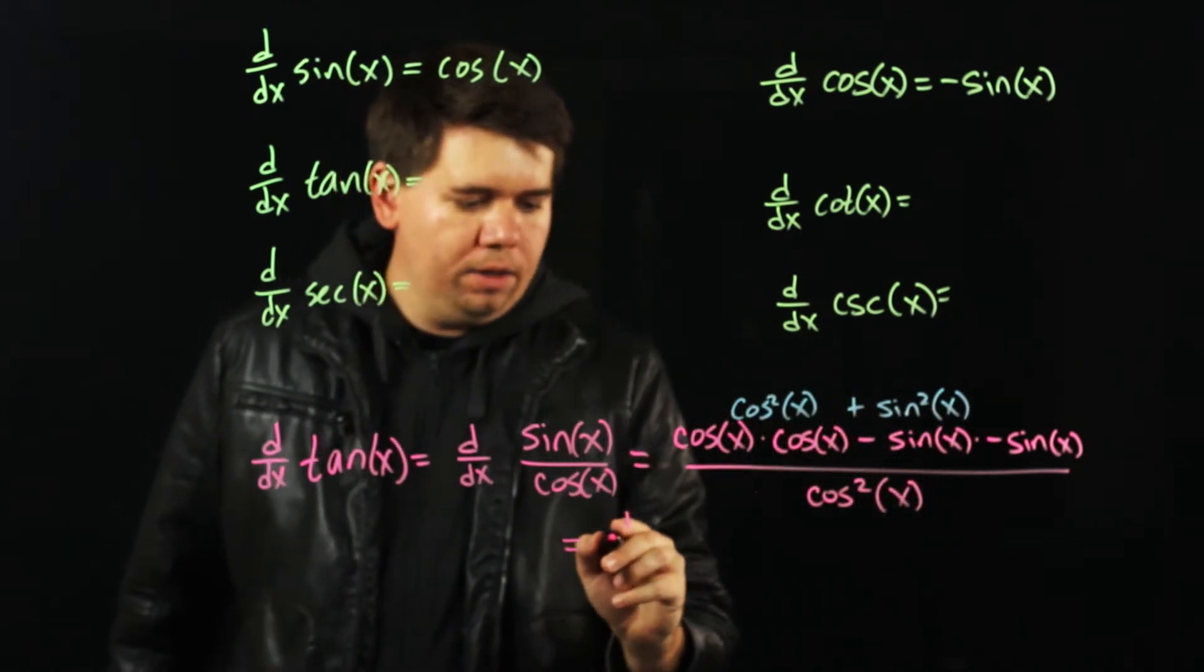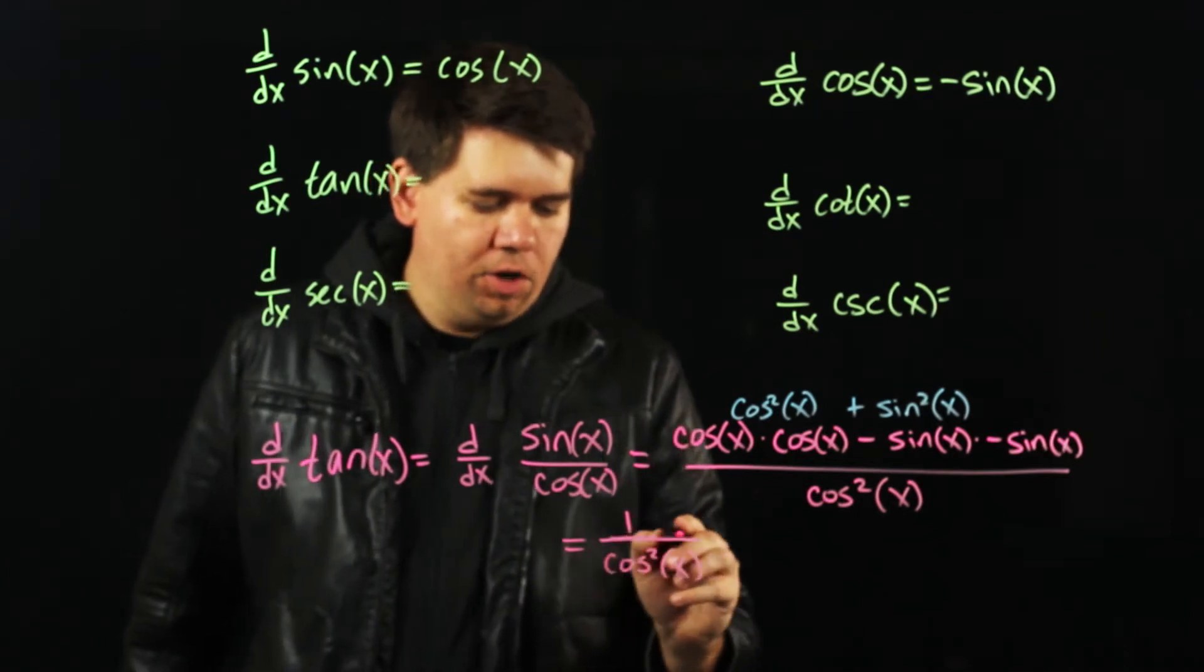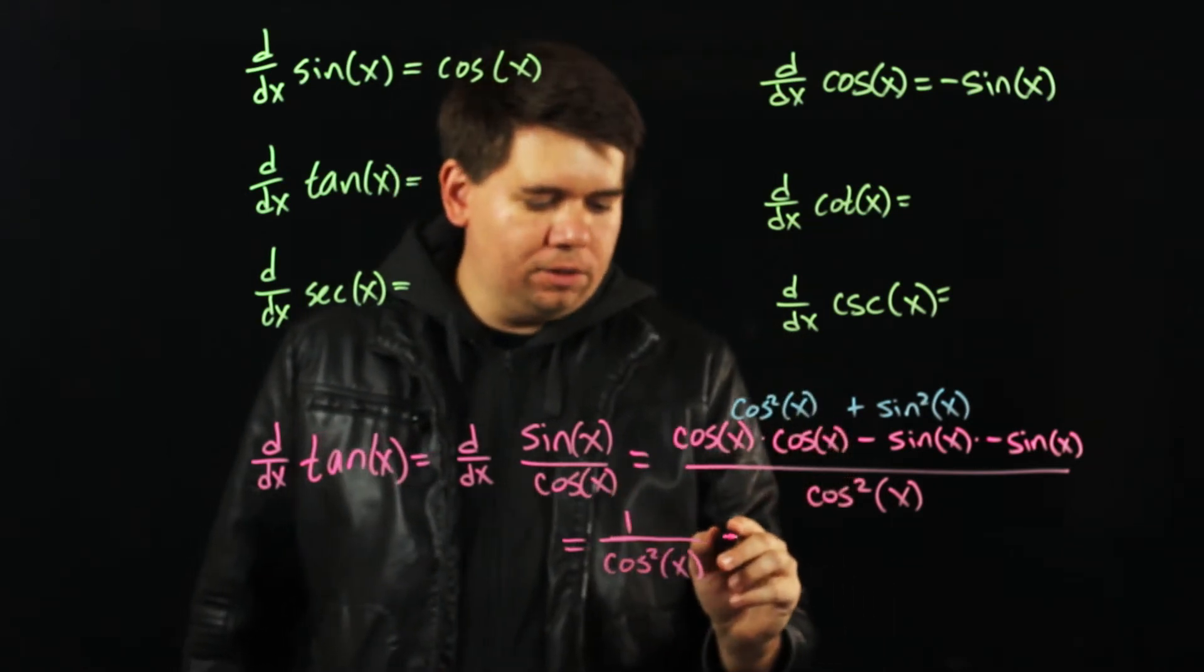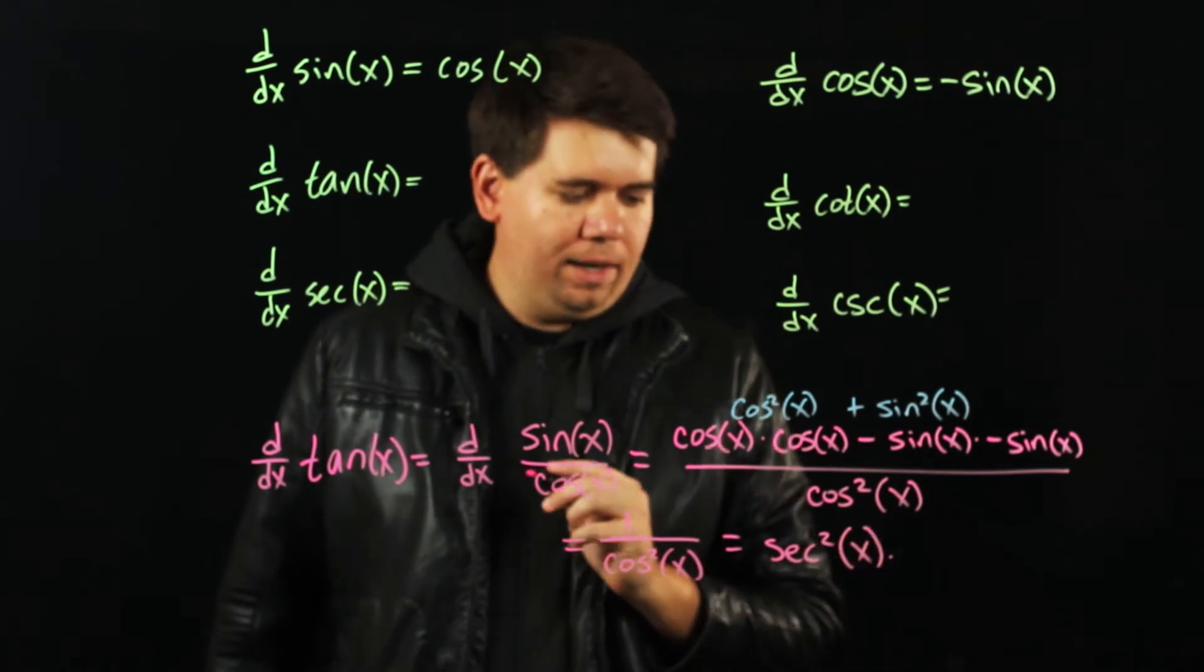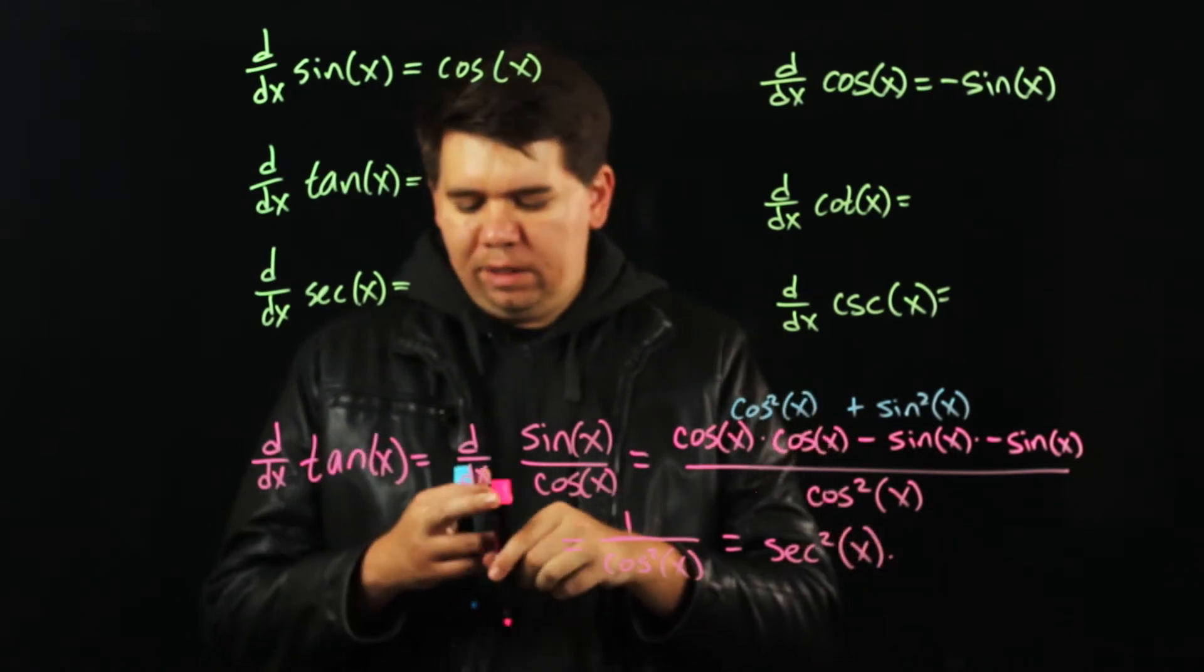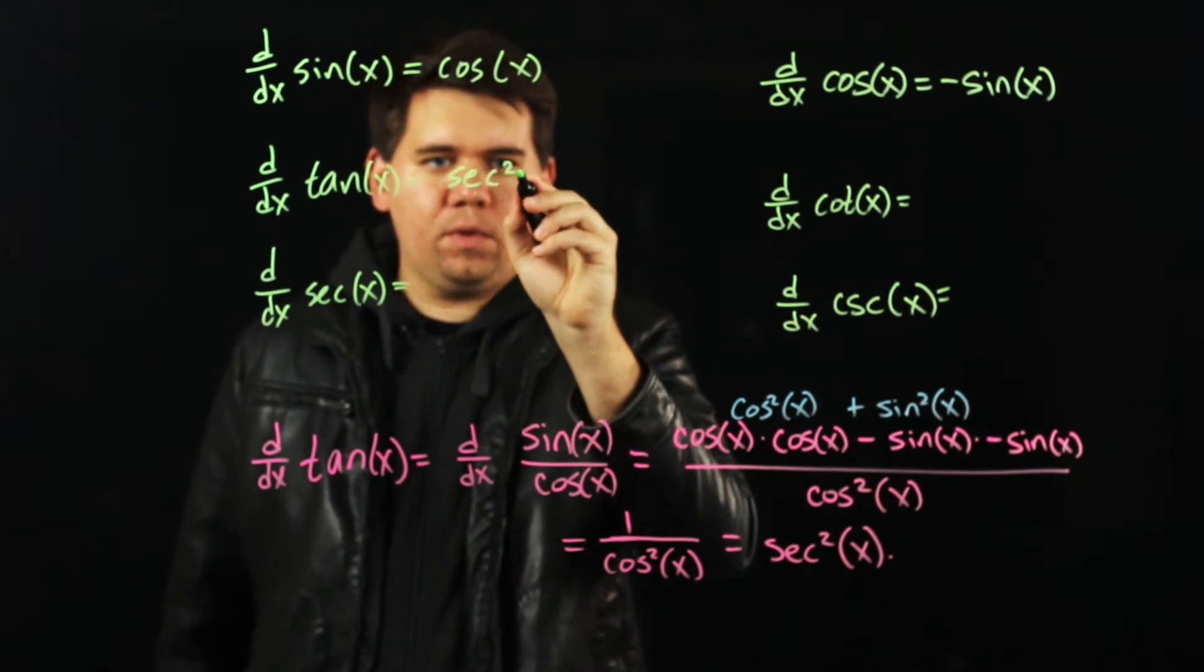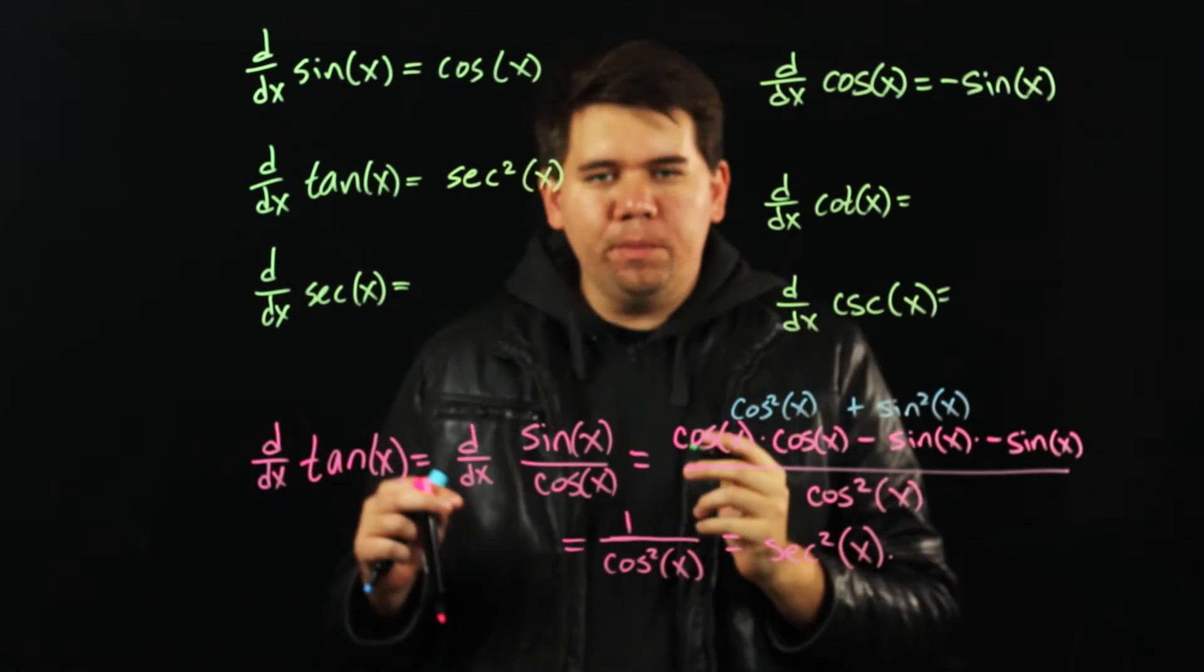So I get 1 over cosine squared of x. 1 over cosine is secant, so 1 over cosine squared is secant squared of x. That is, the derivative of tangent of x is secant squared of x. We can do similar arguments for the other ones.